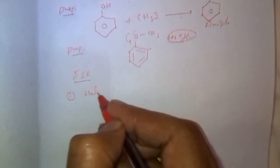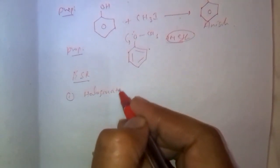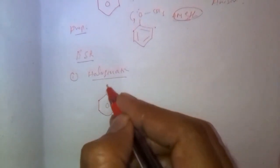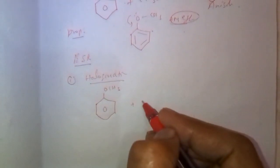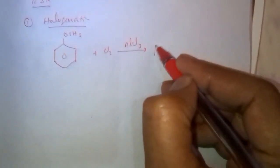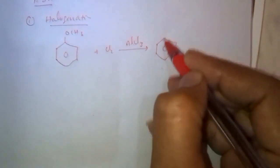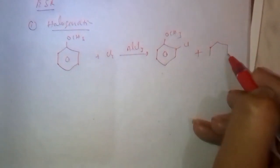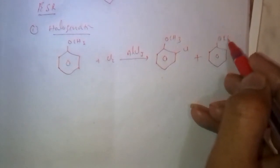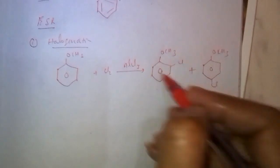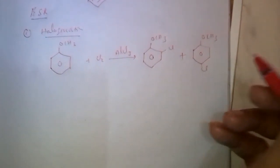Halogenation. OCH3, which on reaction with Cl2, then Cl group is attached at ortho and para position. Ortho and para position. Para product is major product. Cl, ortho-chloroanisole and para-chloroanisole, para is major product.